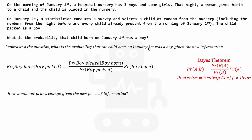Our prior in this case would just be the probability of getting a boy for any birth. You can either get a boy or a girl. Therefore, the prior is essentially the probability of a boy being born, which is the same as the probability of a girl being born, which is just one half — because there are only two outcomes and they are both equally likely.